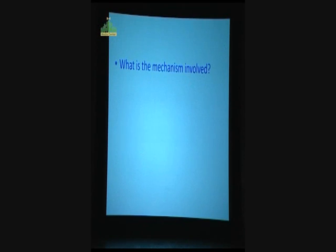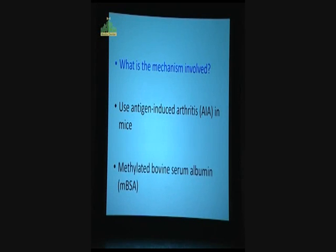What is the mechanism involved in such a combination? We use the animal model, using what we call the antigen-induced arthritis model in mice, using methylated BSA as an antigen. This is a classical gold standard animal model of rheumatoid arthritis.